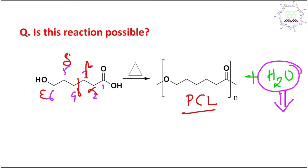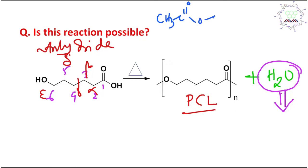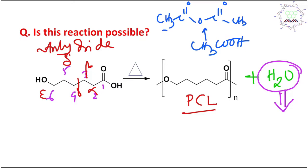To avoid water production, we need to take the anhydride form. An anhydride — for example, acetic anhydride is the anhydride of acetic acid: two molecules of acetic acid release one water molecule and produce acetic anhydride. This is a dehydration step.